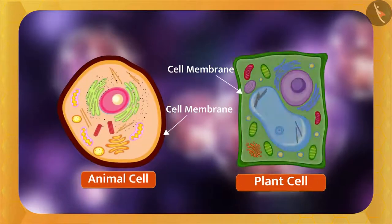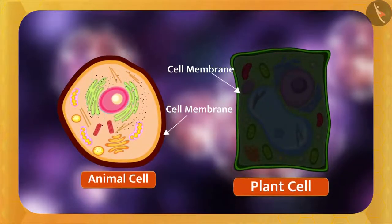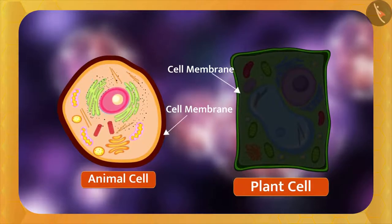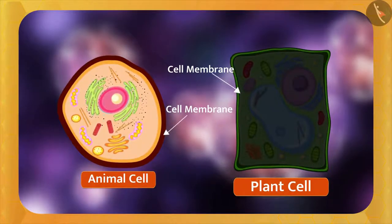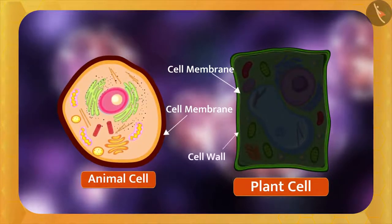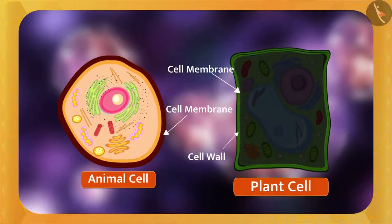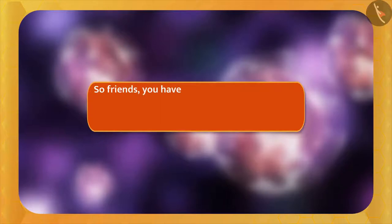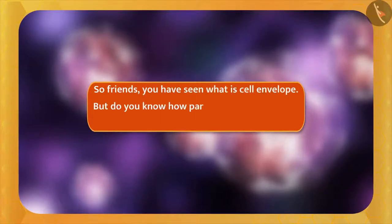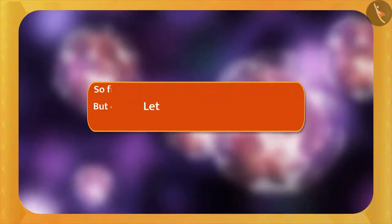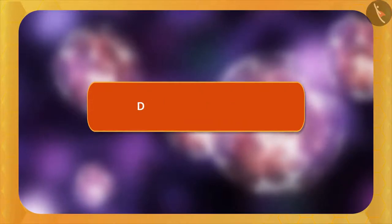But in plant cell, there is a cell membrane which gives shape and there is a cell wall around it which provides protection to both the cell membrane and the cell. So friends, have you seen what is cell envelope? But do you know how particles move in this cell envelope? There are two ways: diffusion and osmosis.